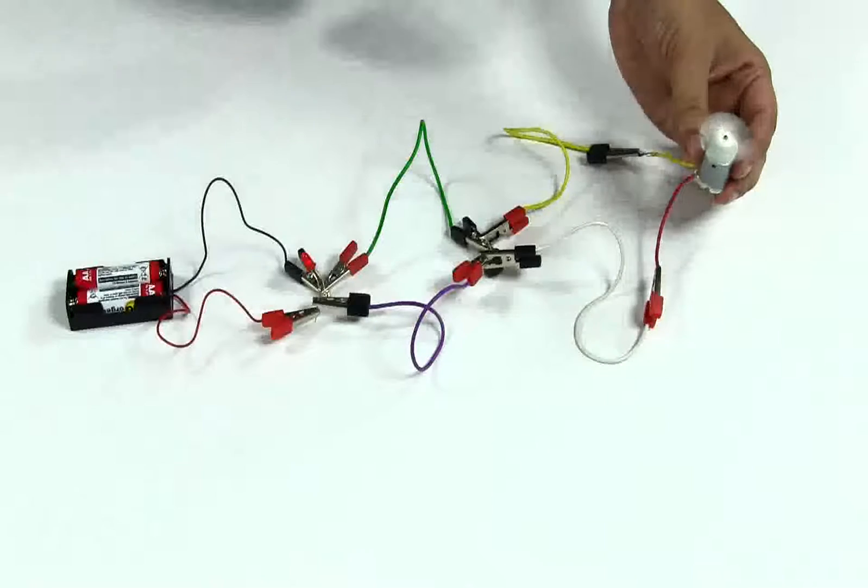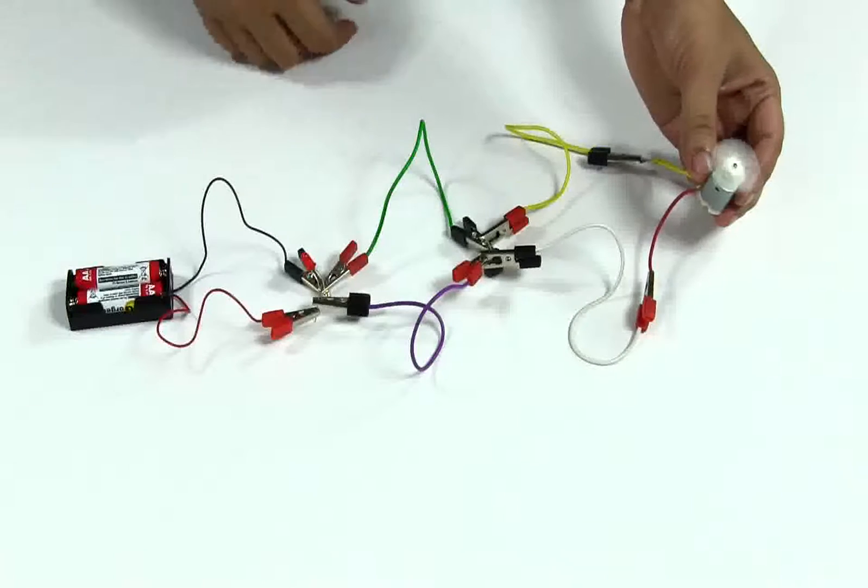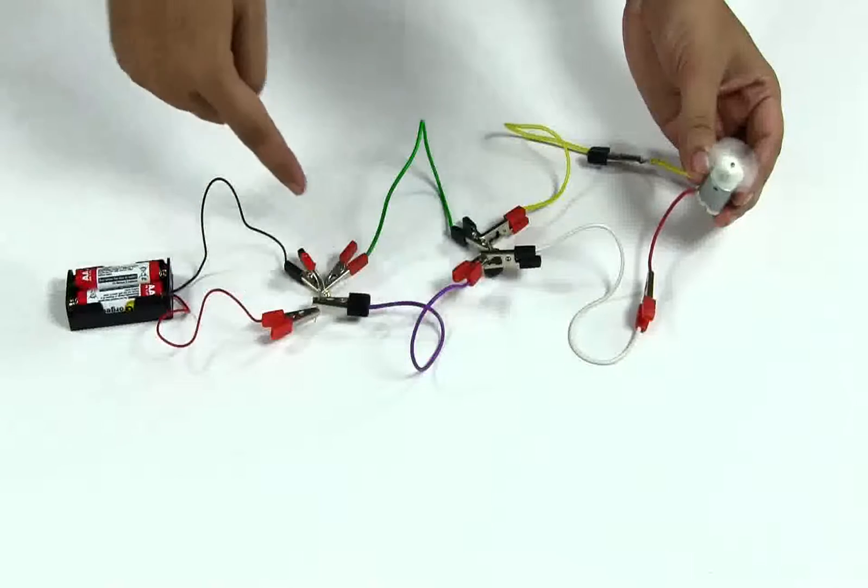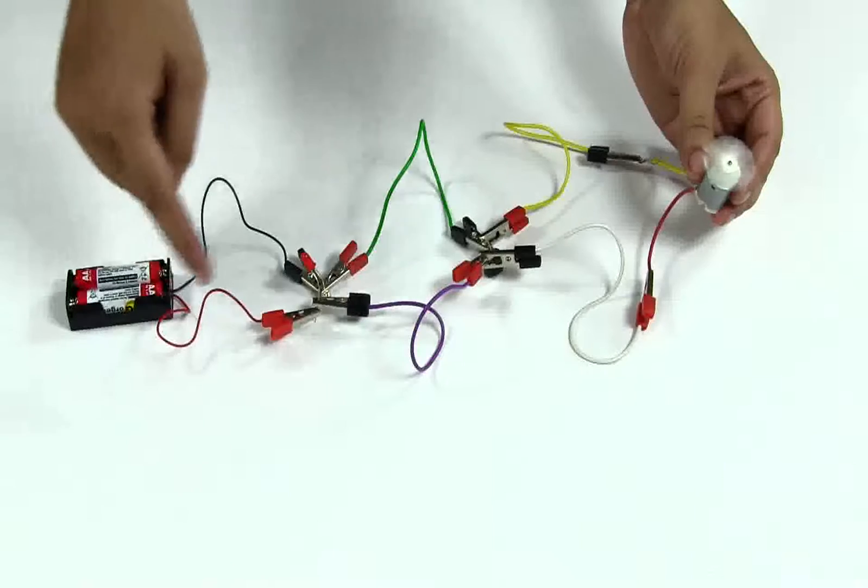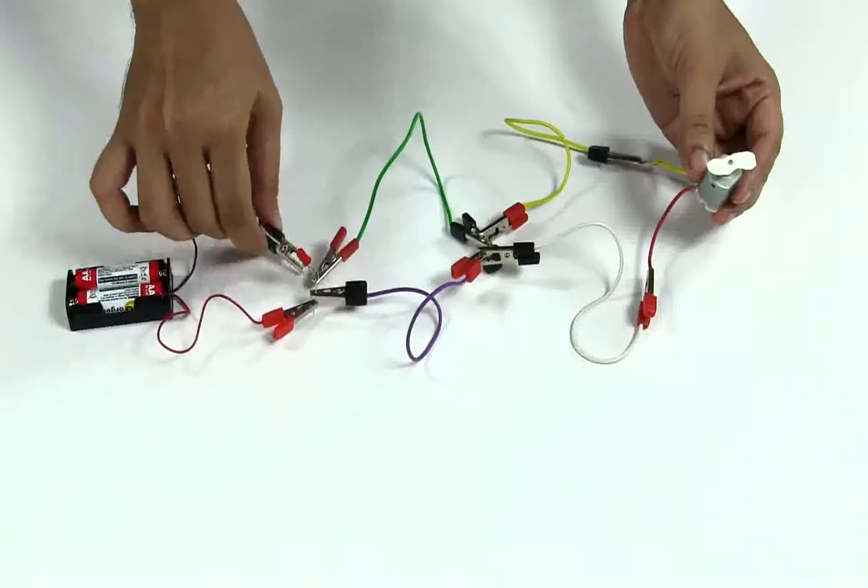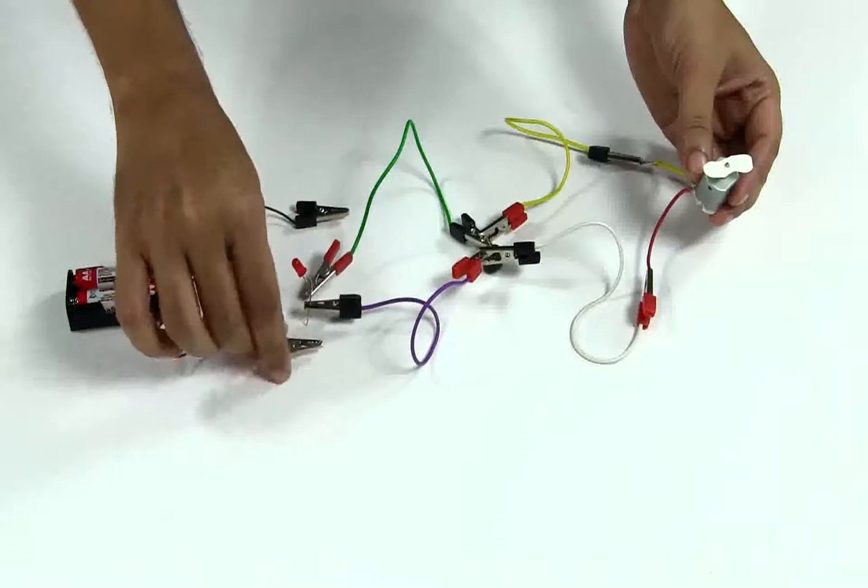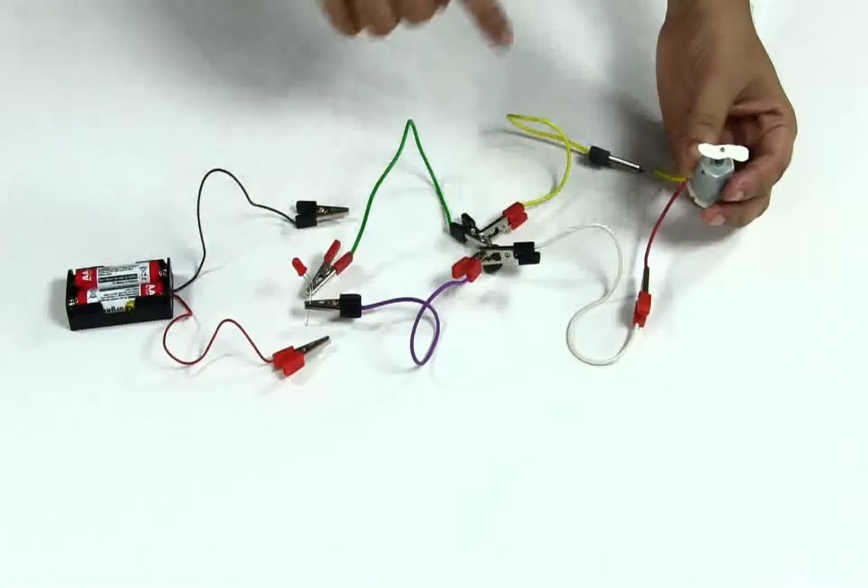The elements have their individual loops. Current is passing through the LED, and another current is passing through this buzzer, and another current is passing through this motor. So in a parallel connection, the elements have their own individual currents.